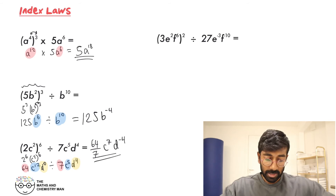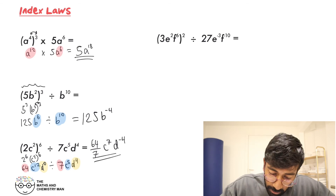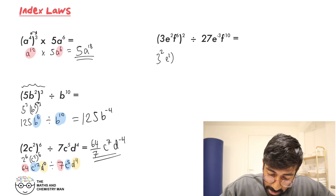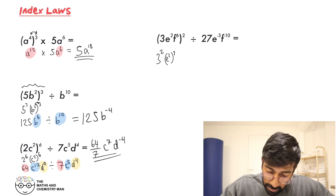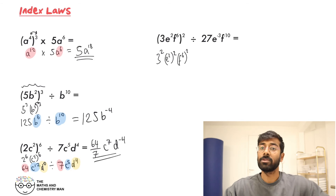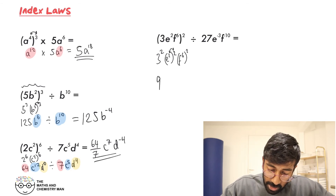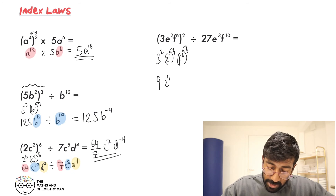One more to go. Break it up again: 3 squared, then E squared all squared, and then F to the 6 all squared. Work this out individually: 3 squared is 9. Then multiply the E powers — E to the power of 4. And multiply the F powers — F to the power of 12.